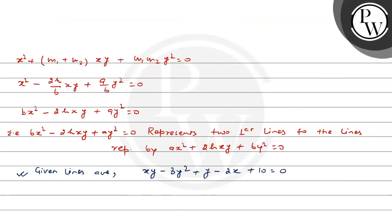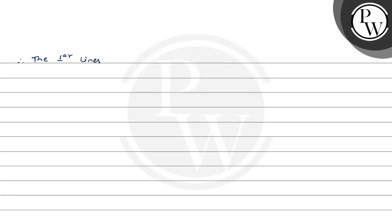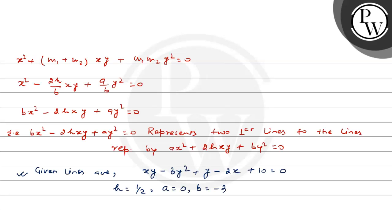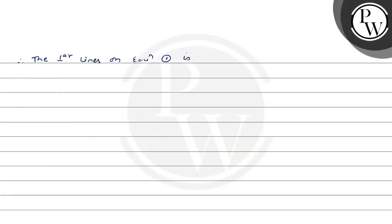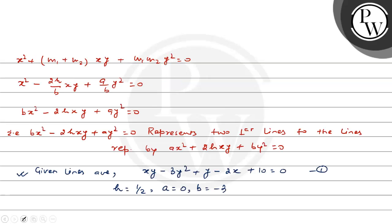यहाँ अगर हम लोग compare करें 2hxy से, तो 2h का coefficient 1 है, यानि h = 1/2. a x square में x का coefficient 0 है, यानि a = 0. और by square में b का value है minus 3. Therefore, the perpendicular lines equation को देखें।